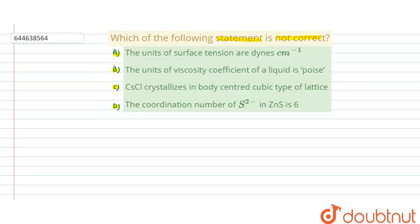First, statement A says the units of surface tension are dynes per centimeter. We know that the unit of surface tension is Newton per meter. We also know that 1 Newton is equal to 10 to the power 5 dynes.